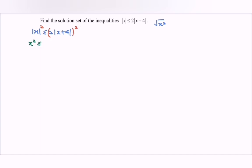So after we square both sides, we have x square, then we have 4 bracket x plus with the 4 bracket square.